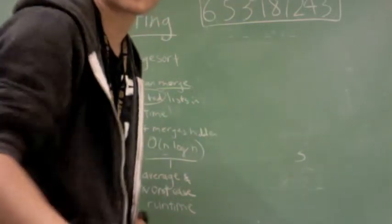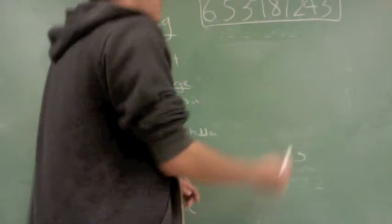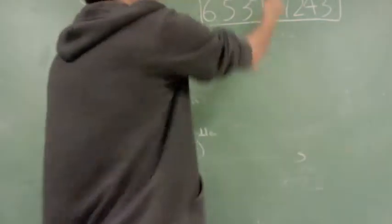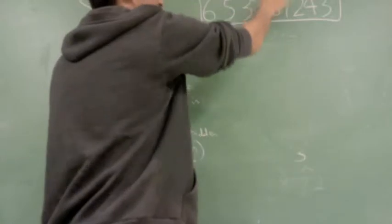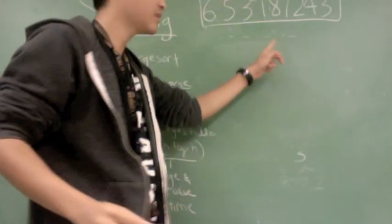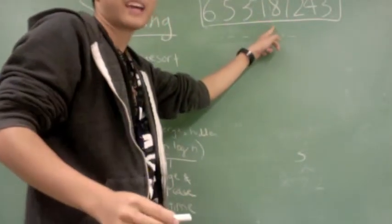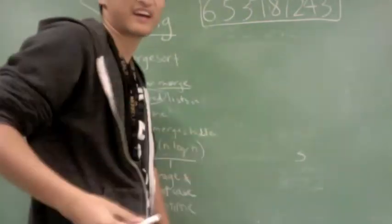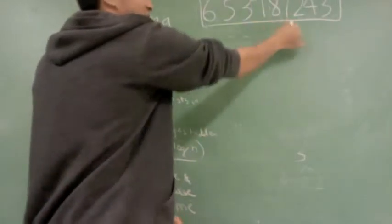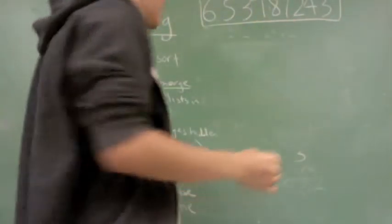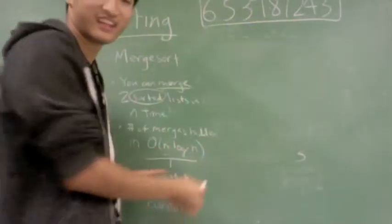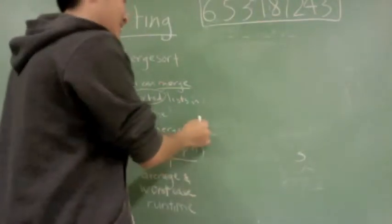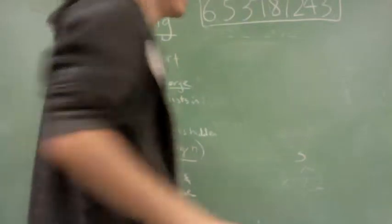I'll be walking through an example of Merge Sort. What you want to do is divide and conquer. By divide, you want to divide each list in half, and then once you hit the base case, you can sort each half recursively. You can rely on the fact that this runs in O(n log n), and two sorted lists can be merged together in linear time.